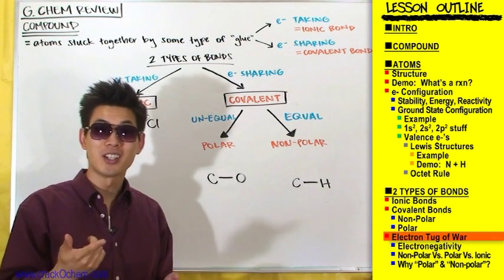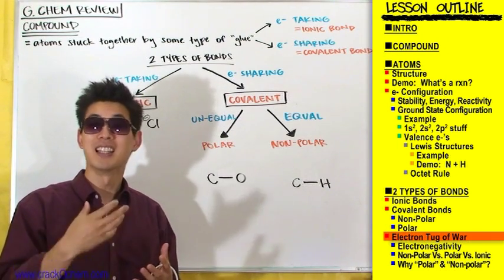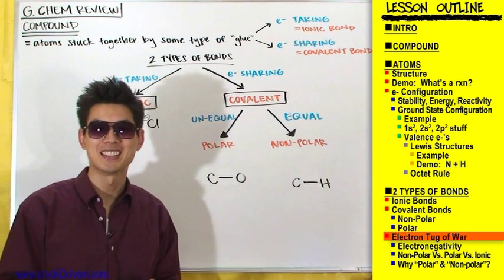So whenever you imagine these bonds, picture atoms in a fierce tug of war trying to pull electrons closer to themselves. What it boils down to is how strong these atoms are at pulling those electrons — and that strength is measured in something called electronegativity.